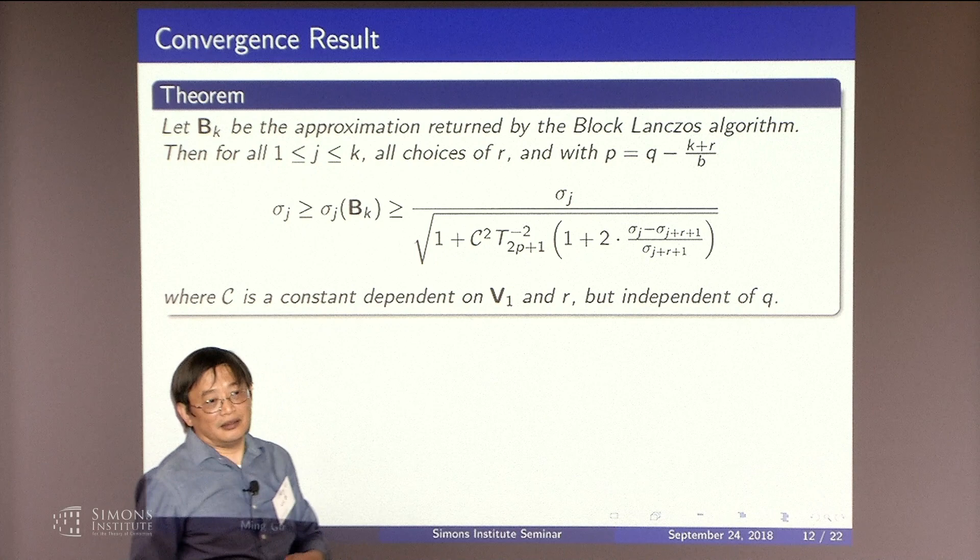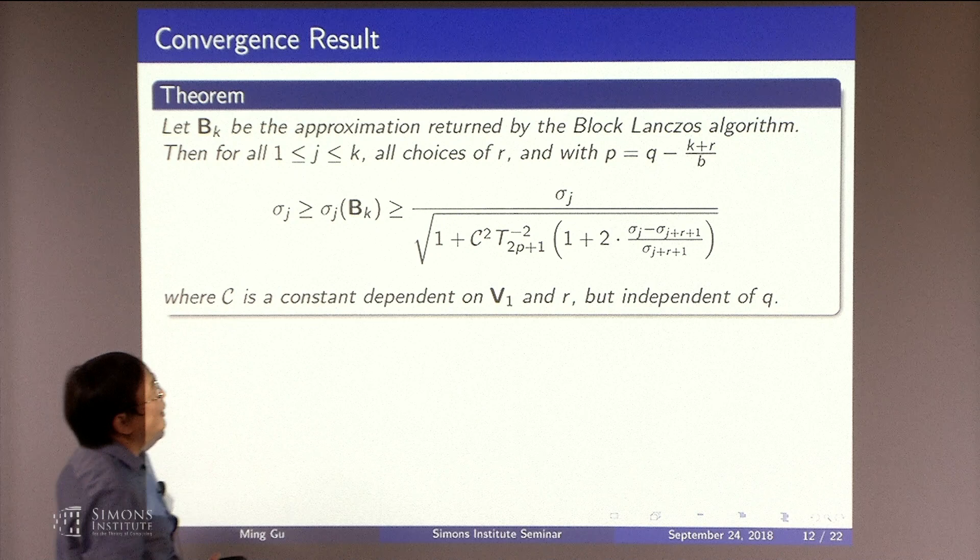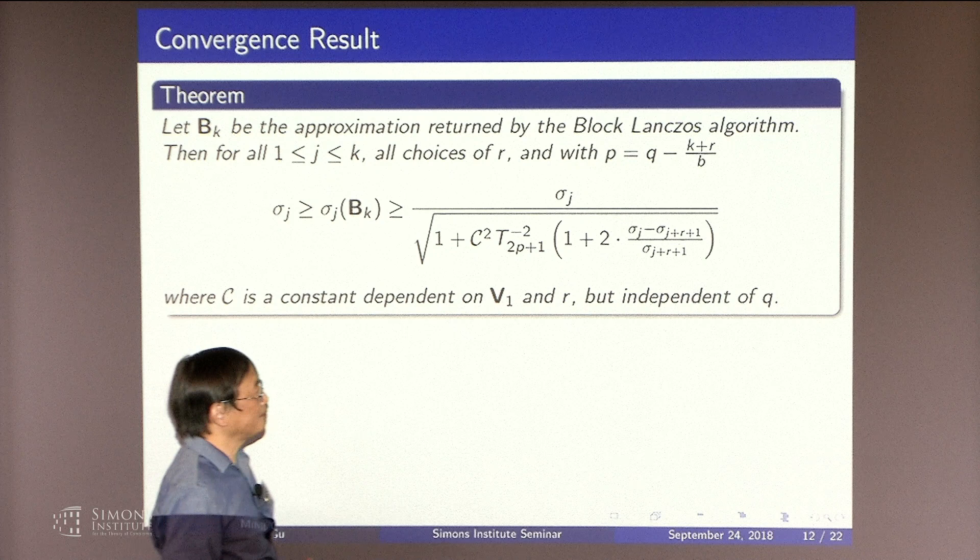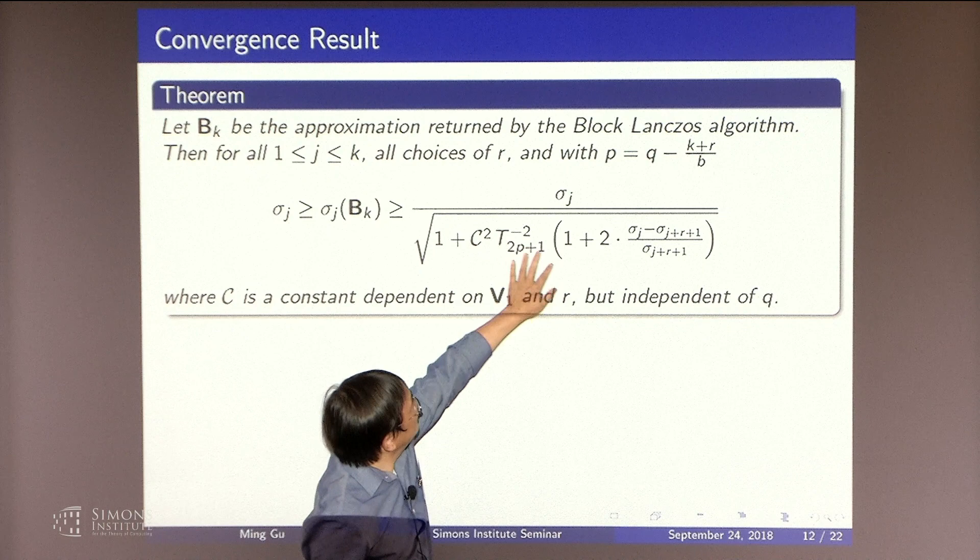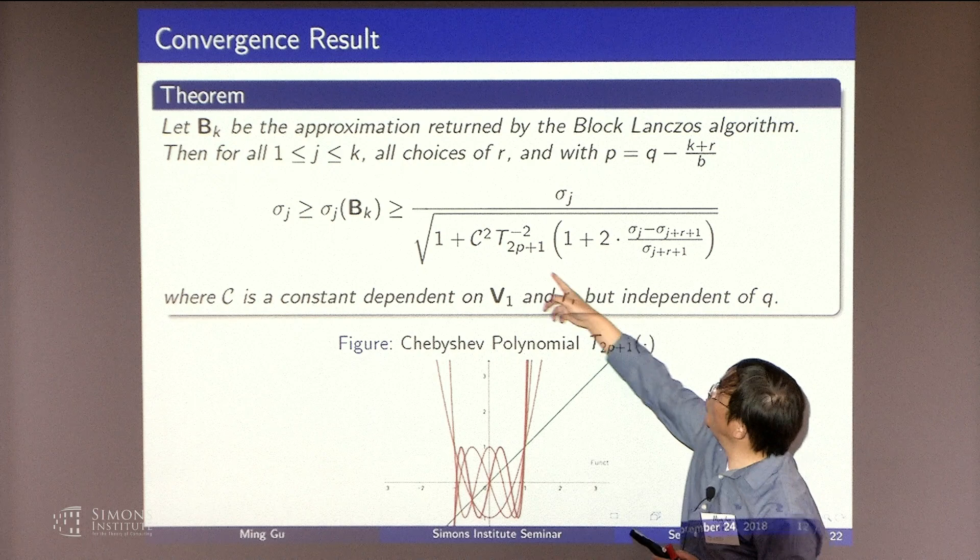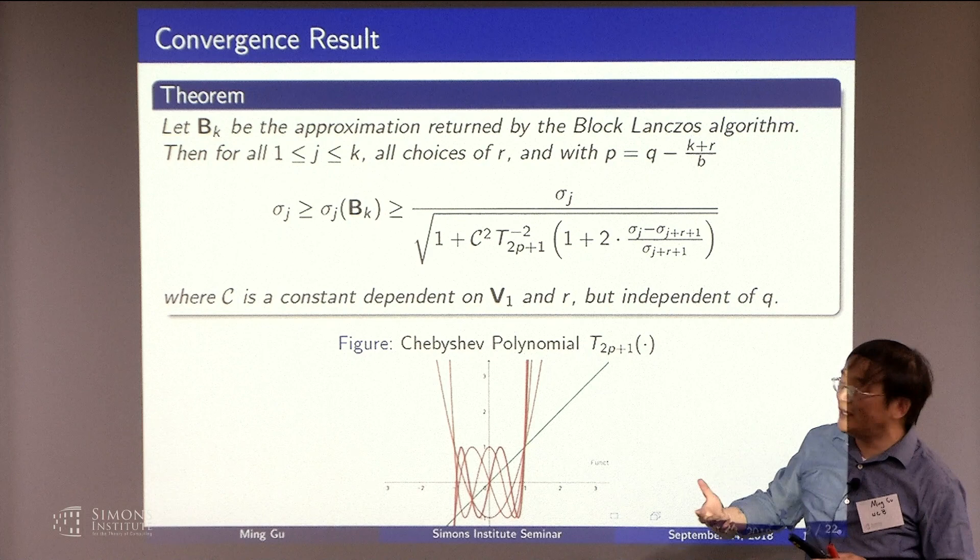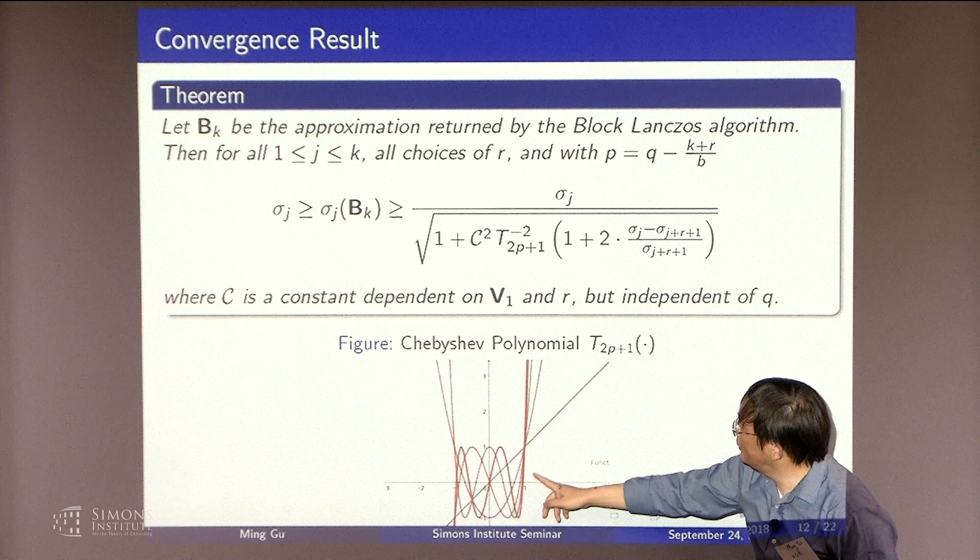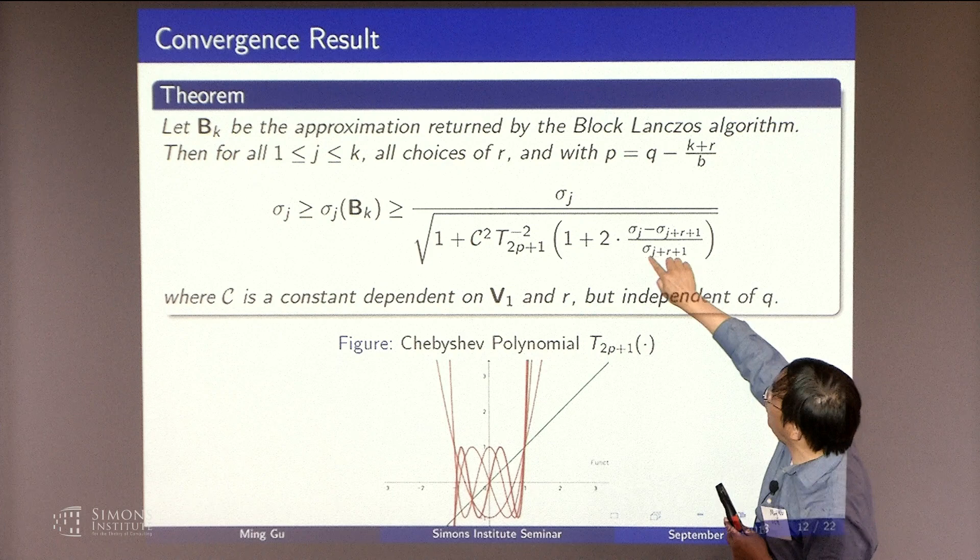We're going to ignore the details. But what's important is that the way this structure, the c does not depend on p or the q. And this part of it is the Chebyshev polynomial. So the convergence depends on this weird thing. You can ignore the details. But the point of the Chebyshev polynomial is that once this thing, this argument is beyond 1 here, then the Chebyshev polynomial shoots to infinity very quickly. So as long as this is bigger than 0, you hope that when you increase p, this whole thing becomes 0 quickly.